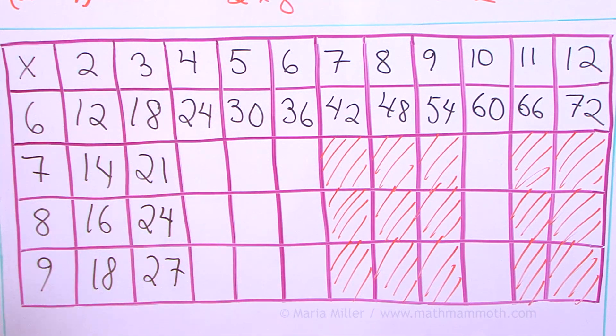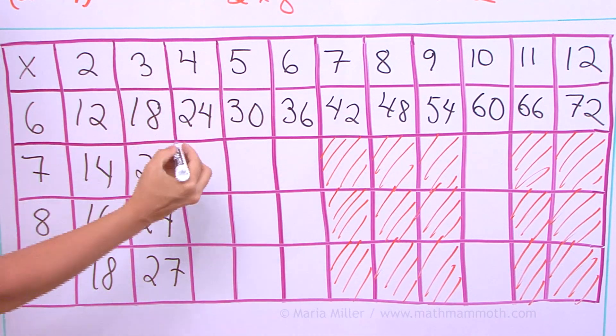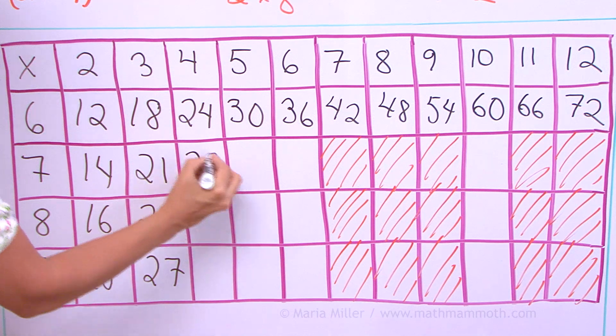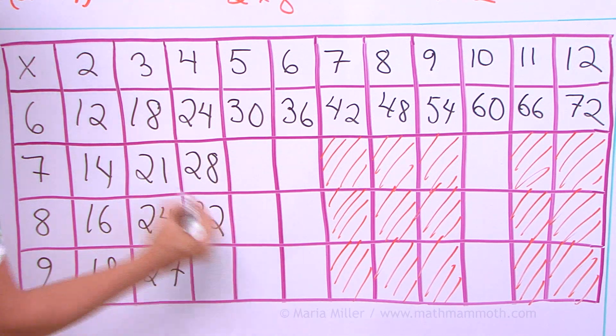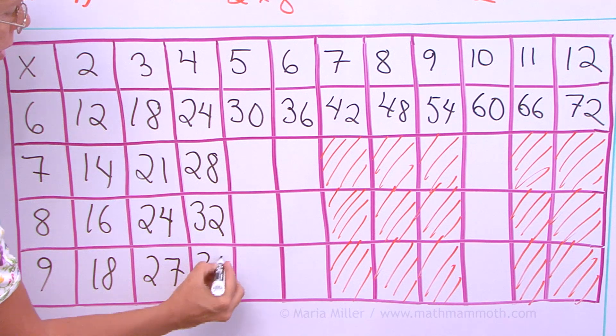Here we go by 4s. 24 and 4 more. So we get 28. And then 32. And 4 more, 36.